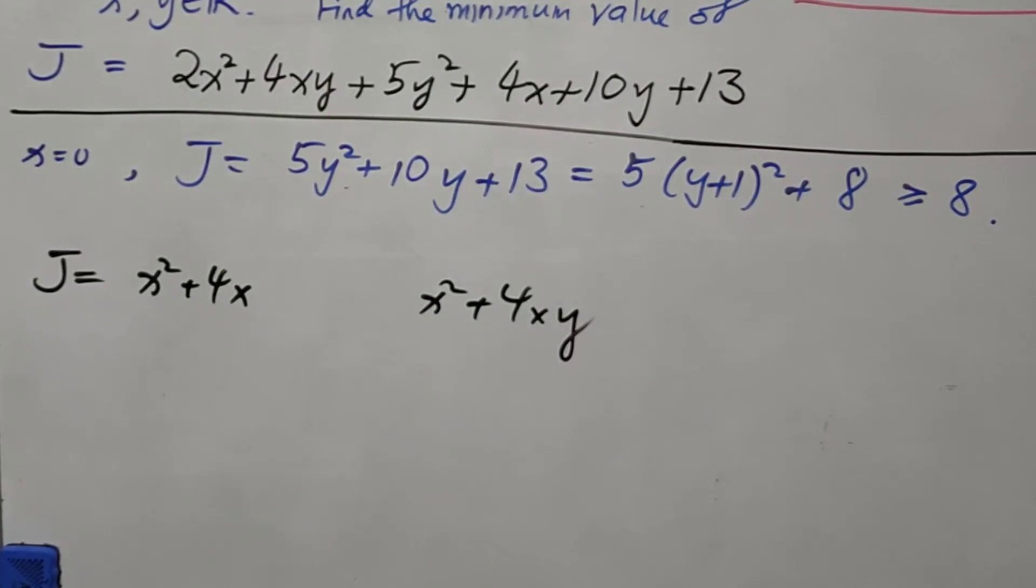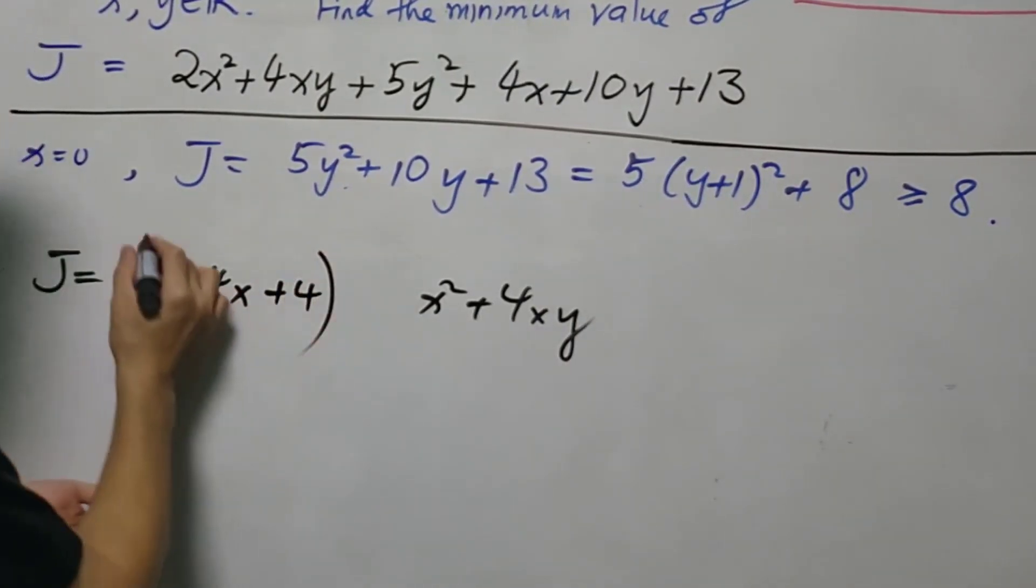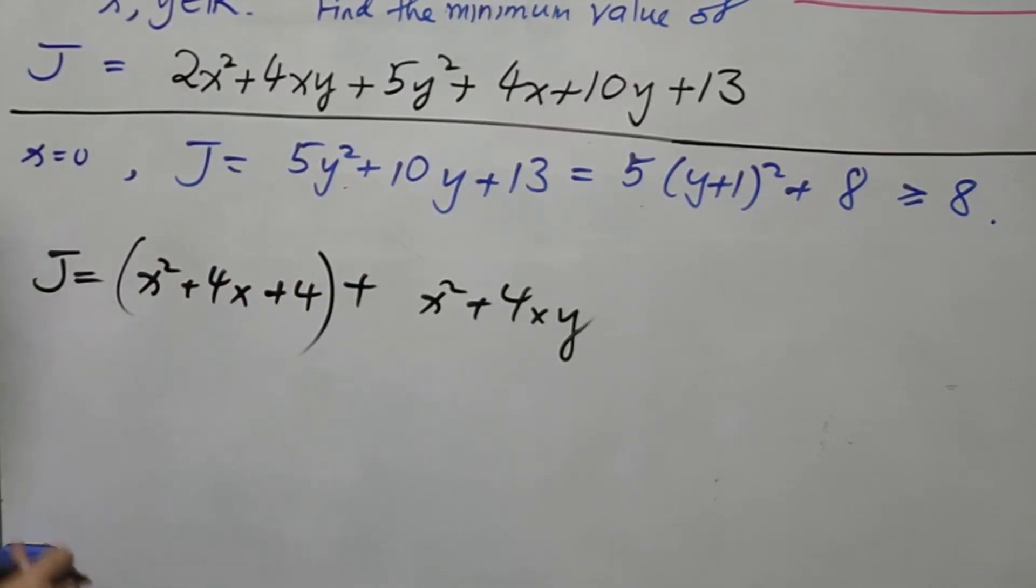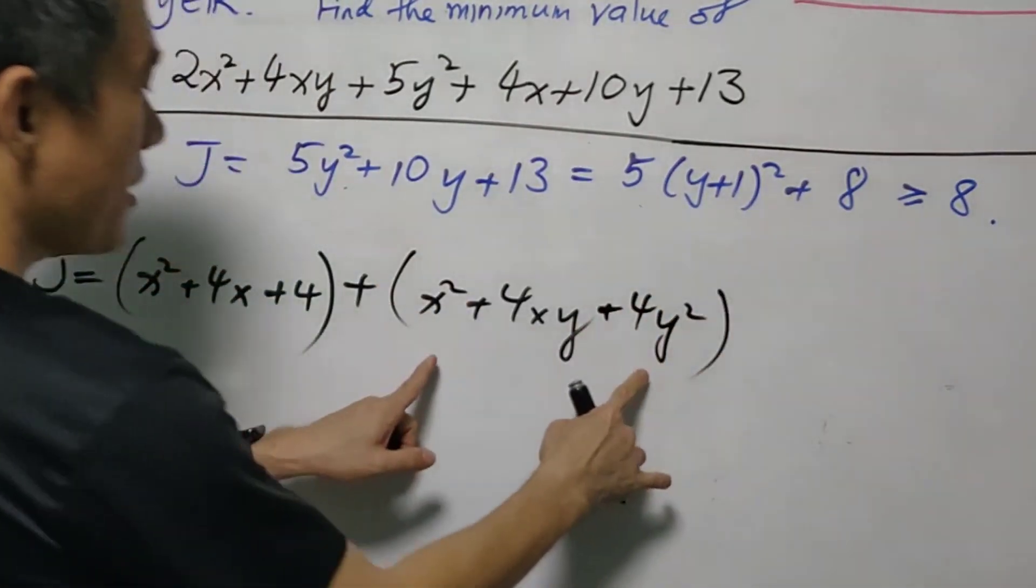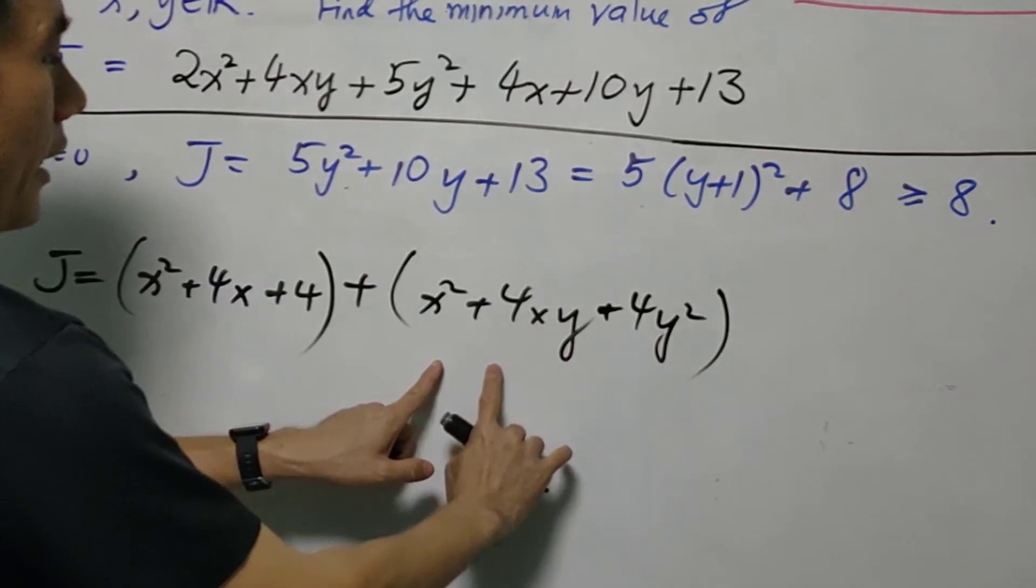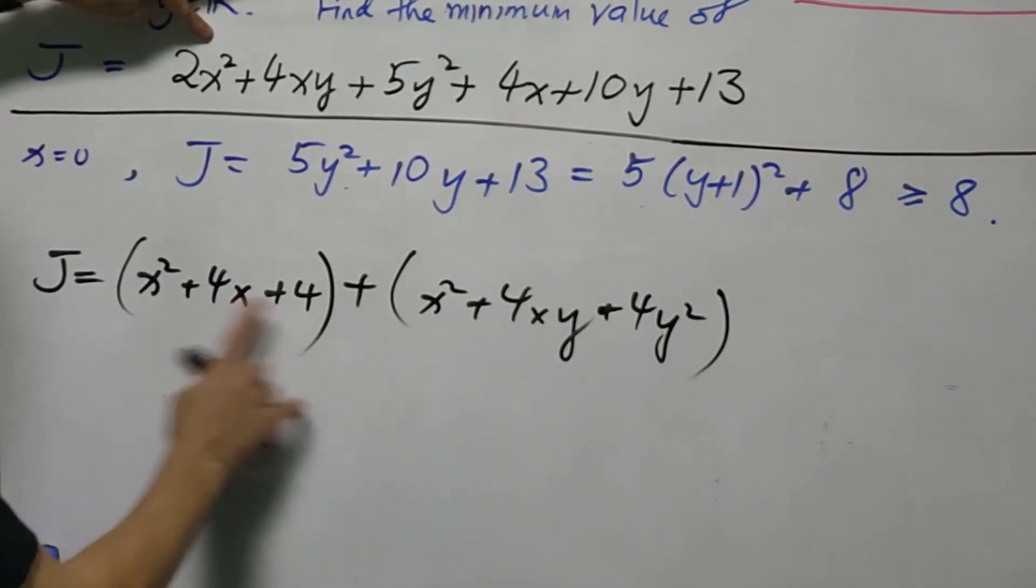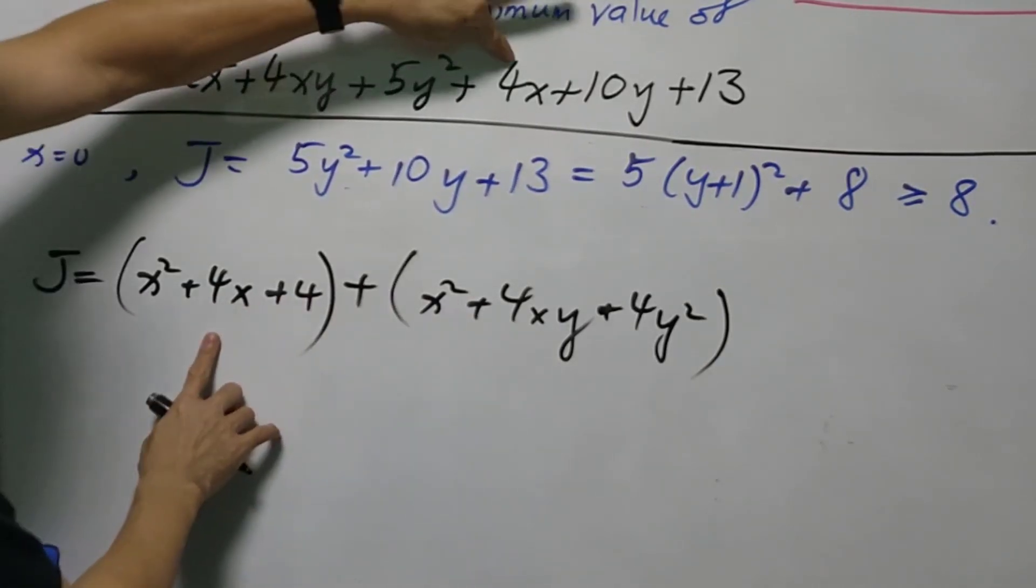Now we are going to do the completing the square. So we need to plus a 4 here so that later on this can be written as square of x plus 2. Likewise, we can write 4y squared so that this can be written as square of x plus 2y. Now we compare again. We have 2x squared, 4xy, 4x.